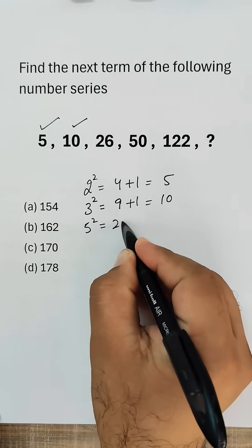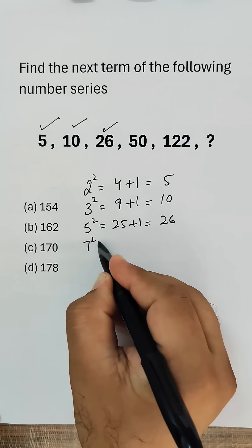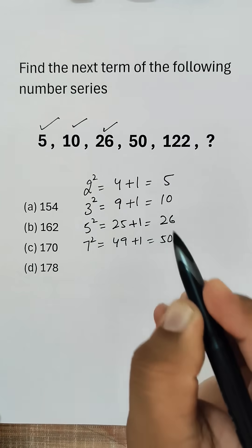5 squared is 25, if we add 1 we get 26. 7 squared is 49, if we add 1 we get 50.